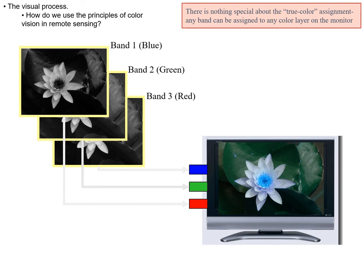There's nothing special about the true color assignment — any band can be assigned to any color layer on the monitor. In this case, blue is assigned to the red display color, green to the green display color, and red to the blue display color. We've swapped blue and red, so instead of the center portion showing up as yellow from red and green, it shows up as cyan from blue and green.